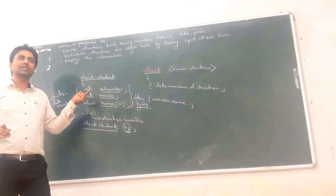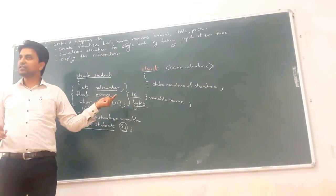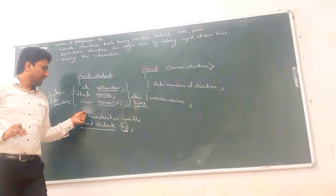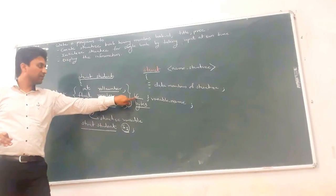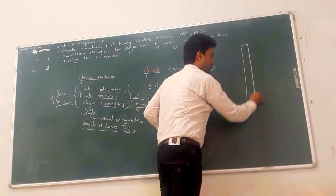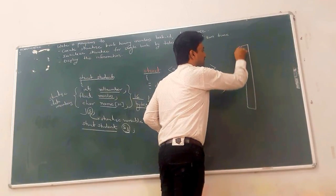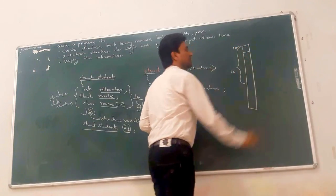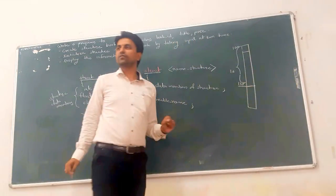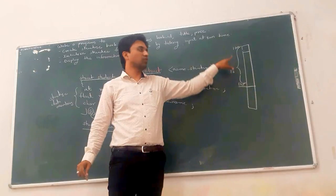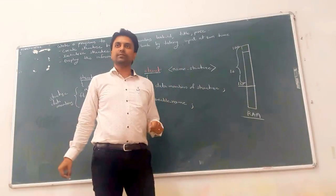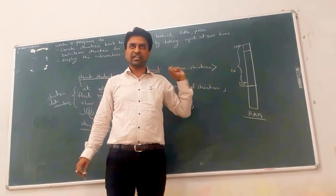The partition where memory is reserved depends on the storage class. If the storage class is global, then the global partition is used. If the storage class is local — that is, auto — then the stack partition is used and memory gets reserved. For S, a 16-byte block is reserved on the RAM. Suppose the base address is 100, then the last byte address is 115, giving a total 16-byte block.